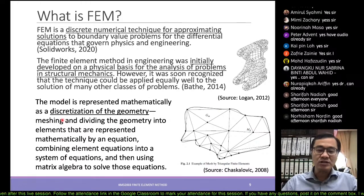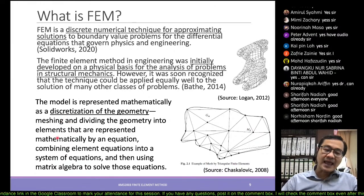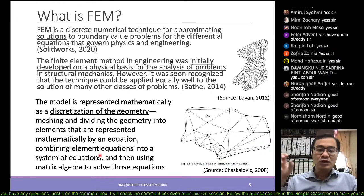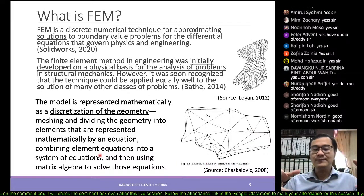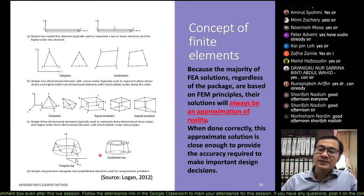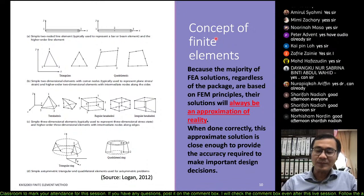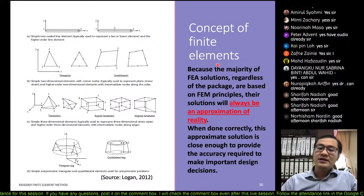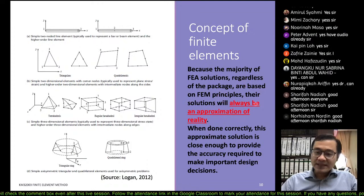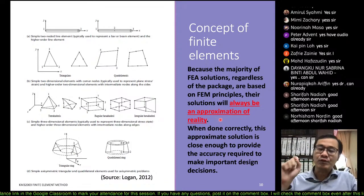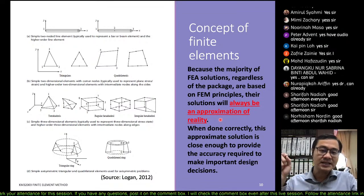Once we mesh the geometry into individual elements, each element can be represented with a mathematical model. When we combine and solve them simultaneously, we can solve for the whole geometry. This is the core concept: discretize, combine, and get the result. Therefore the majority of FEM solutions are approximations — there is no exact real answer, only an approximate solution generated by the computer.